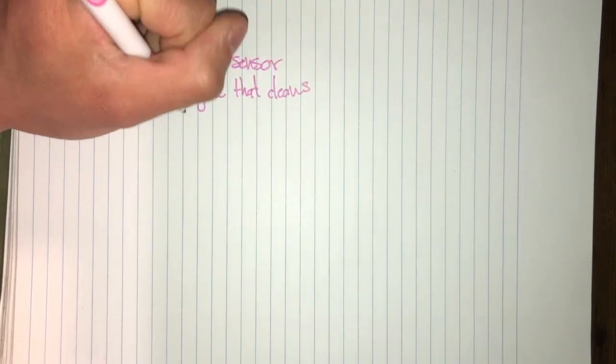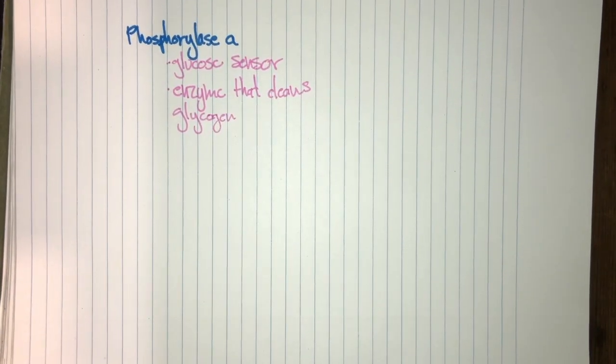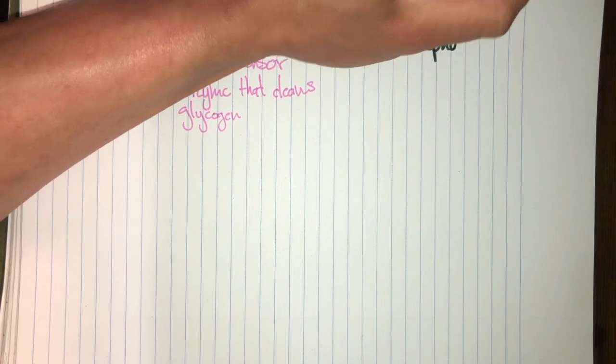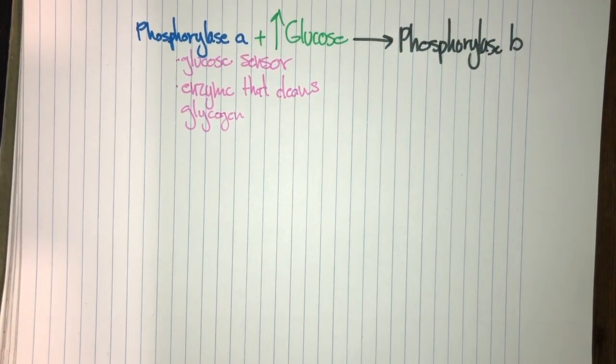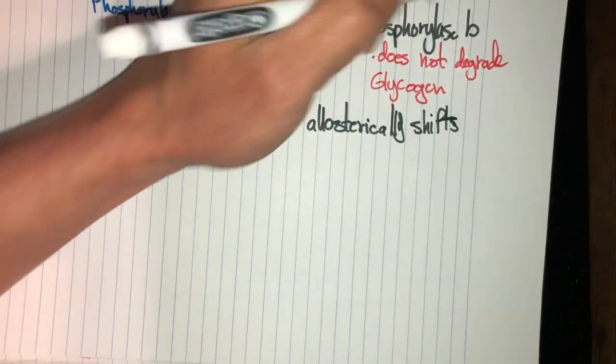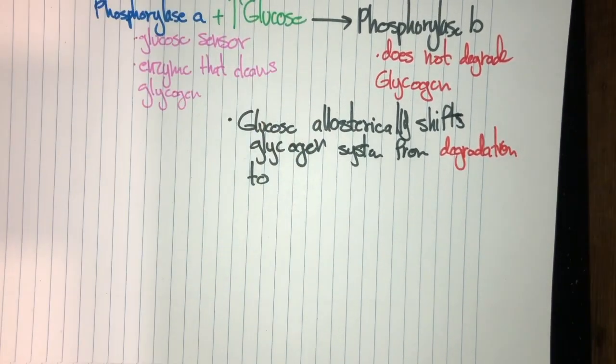All right, so let's talk about phosphorylase a for a second. It's a glucose sensor in addition to also being the enzyme that cleaves glycogen. So when glucose levels are high, it actually binds to phosphorylase a and it is converted to phosphorylase b. Phosphorylase b cannot readily degrade glycogen, so there's a big difference between the two. This means glucose allosterically shifts the glycogen system from a degraded system to a synthetic one.